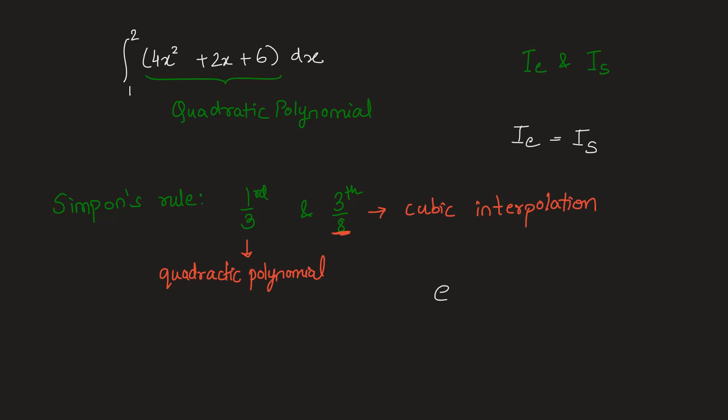In that case, error e will be equal to (I_E - I_S)/I_E × 100. Because they are equal to each other, the difference is 0, so the error is 0.